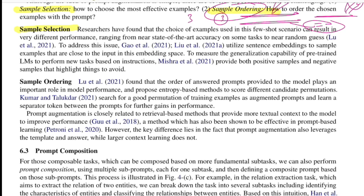For sample selection, one 2021 work uses sentence embeddings to sample examples that are close to the test input in embedding space — finding semantically similar samples. Mishra et al. (2021) provided both positive and negative samples to hint at what the model should not output, improving generalization. Negative samples can be out-of-domain examples or negated versions of the input sentence.